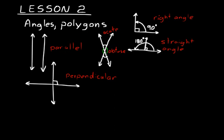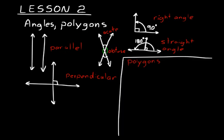Now let's talk about polygons. Polygons are defined as simple, closed, flat shapes whose sides are all line segments. So let's think about that: simple, closed, flat shapes whose sides are line segments.